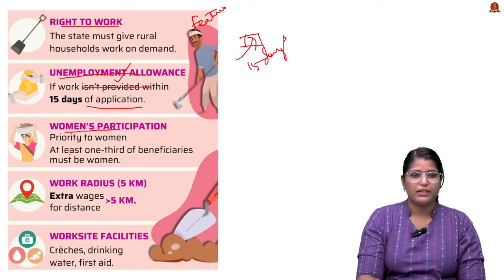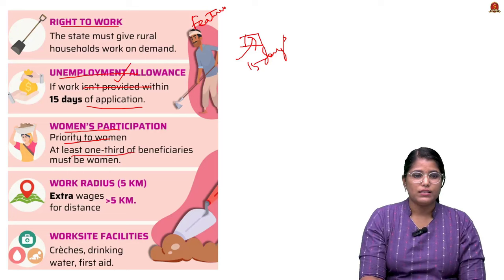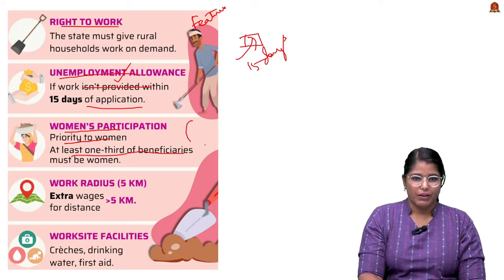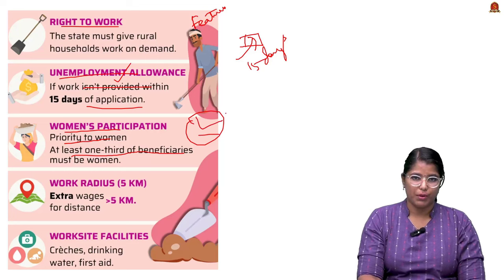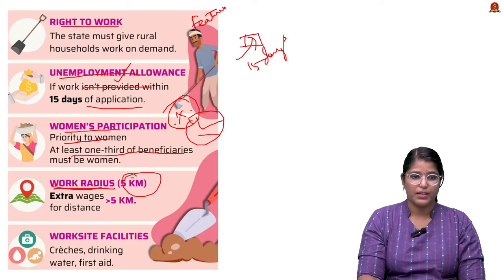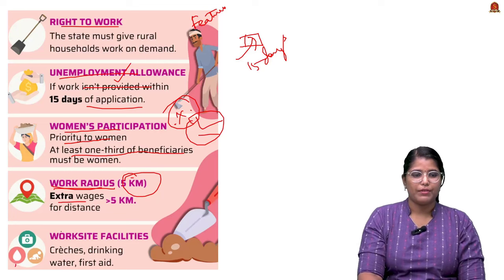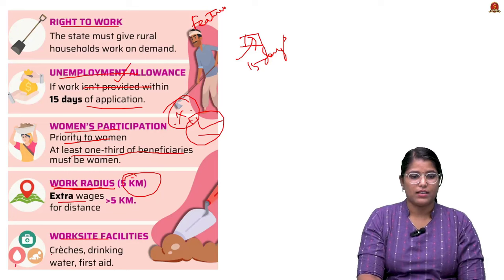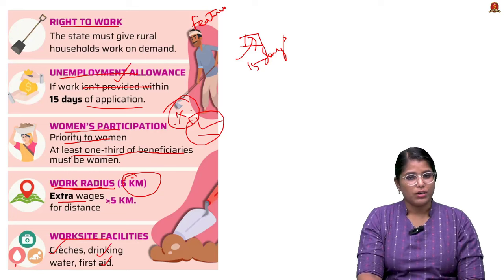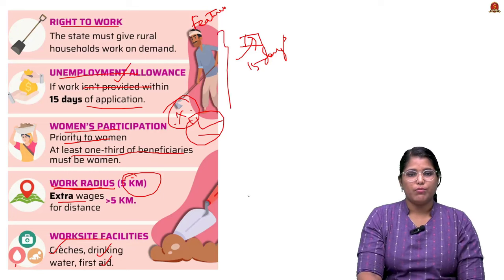Thirdly, it ensures women's participation — priority is given to women with at least one-third of the beneficiaries being women, which is a very important mandate. Fourthly, the work radius is within five kilometres, and extra wages are provided if the work site is greater than five kilometres away. Additionally, work site facilities like crèche, drinking water, and first aid facilities are provided to workers.